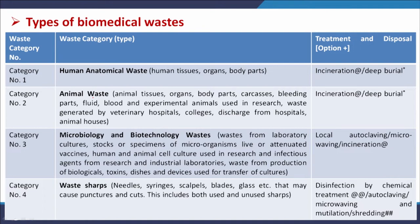Category two is animal waste, which may include animal tissues, organs, body parts, carcasses, bleeding parts, fluid, blood, and experimental animals used in research. It also includes waste generated by veterinary hospitals, colleges, discharge from hospitals, and animal houses. This type of biomedical waste can be disposed through incineration and deep burial.